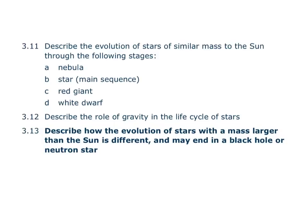What you need to be able to do is describe the evolution of stars of similar mass to the Sun through the following stages: a nebula, a main sequence star, a red giant, and a white dwarf. So let's go through that first.